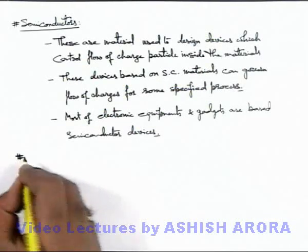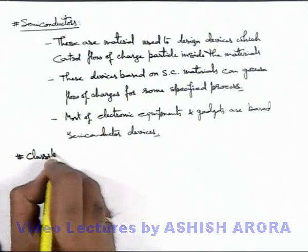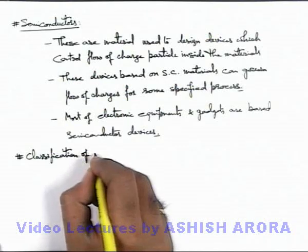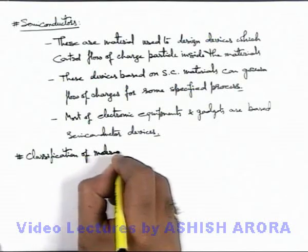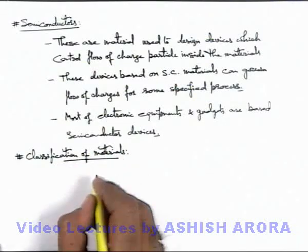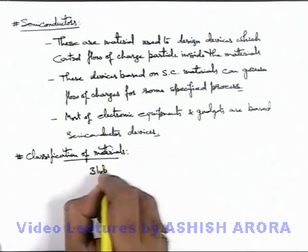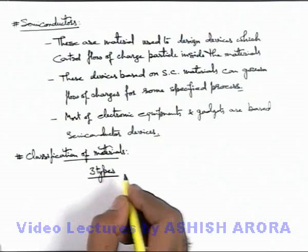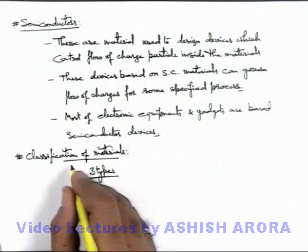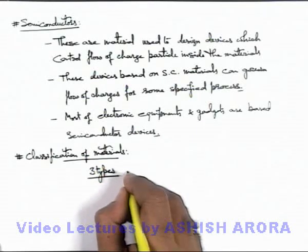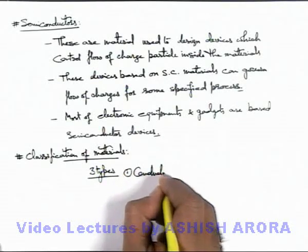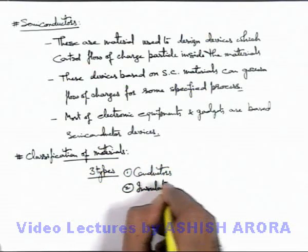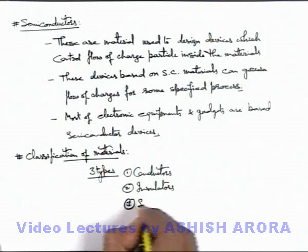So before starting with the study of semiconductor devices, let's first discuss about the classification of materials. When we talk about the classification of solid materials available in nature, we can simply say there are 3 types of materials, or 3 kinds of materials available in the form of solids. All materials are divided into 3 major categories: number 1 is conductors, number 2 is insulators, and number 3 is semiconductors.